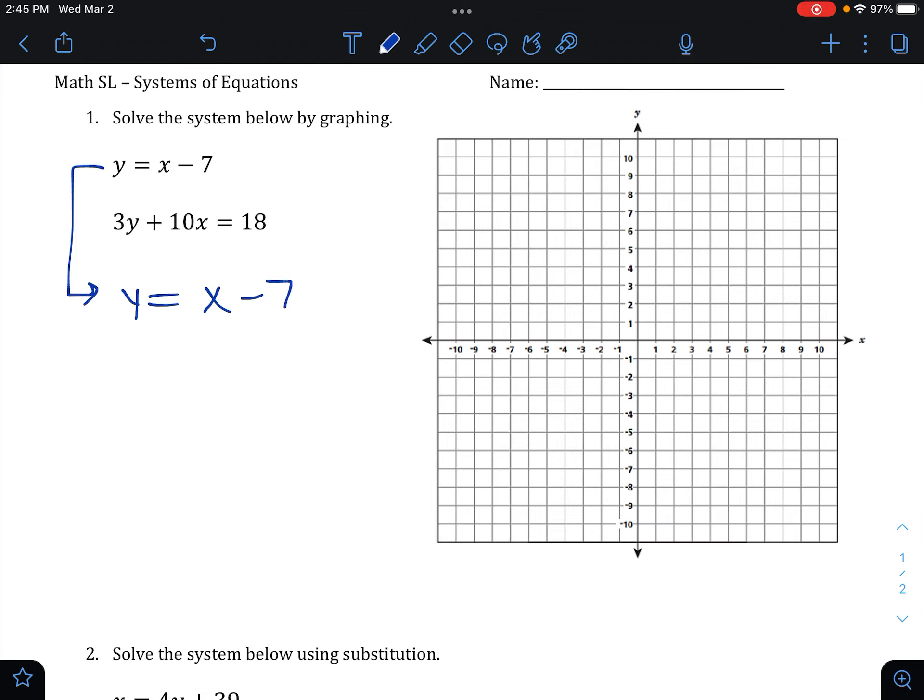The number in front of x is always our slope. If there's no number there, we put a 1 in front, because that's the coefficient of any letter by itself. So the slope here is going to be 1, and the y-intercept is going to be the constant by itself, which is the negative 7.